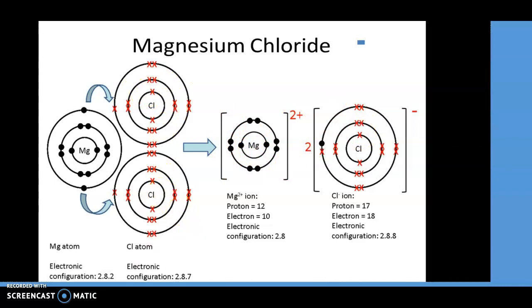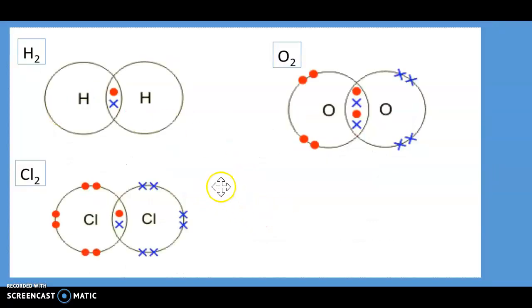Looking at covalent bonding, covalent bonding is a bonding between two non-metals to get full shell outer configuration. Here hydrogen has one electron, so it joins with another hydrogen and they both share an electron each to become H2 and stable.